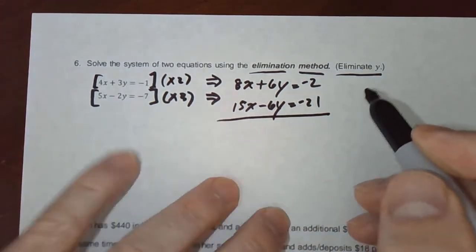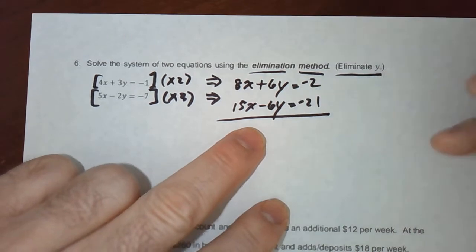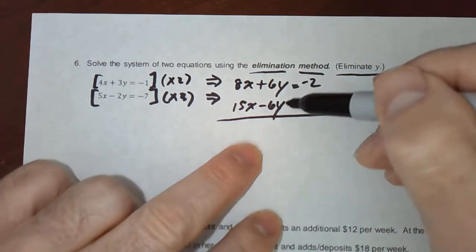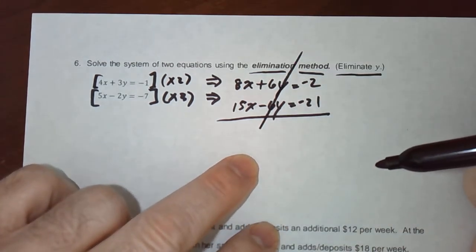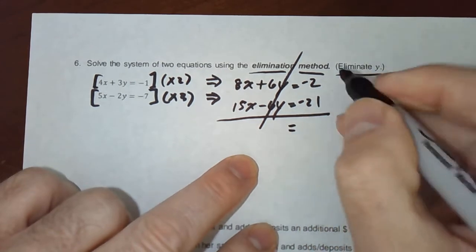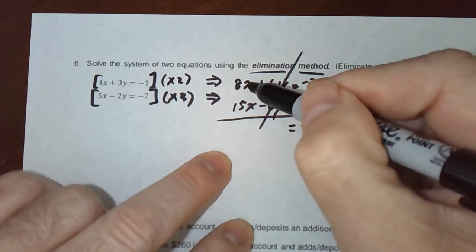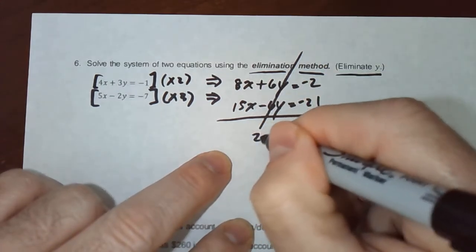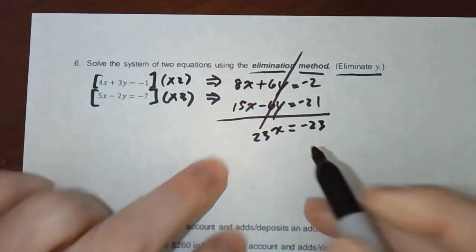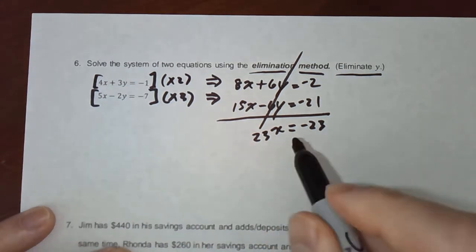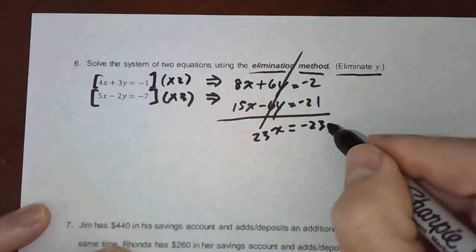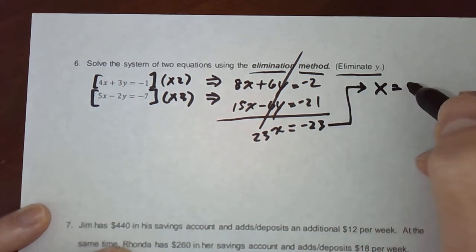And as we desired, our coefficients of the y's are now opposite. So when we add them together, they cancel out. So when we add the equations, we'll get negative 21 and negative 2 is negative 23. 8x and 15x is 23x. So when we divide both sides by 23, we get x equals negative 1. I'll write that right up here.